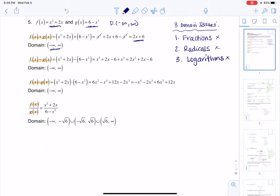And when I subtract the two functions, this is what I'm left with. Again, no fractions, no radicals, no logs. Domains all real numbers. When I multiply the two functions, I get this gigantic polynomial, but still no fractions, no radicals, no logs.